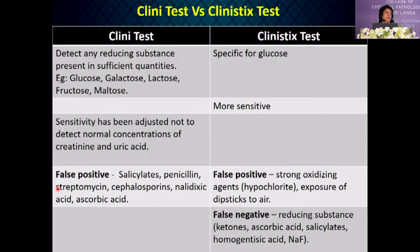Comparing Clinitest and Clinistix: Clinitest detects reducing substances, so glucose, galactose, lactose, fructose and maltose will all give positive results. Clinistix is specific for glucose and is more sensitive. In urine, creatinine and uric acid can also give a positive Clinistix result, but the sensitivity has been adjusted so as not to detect their normal concentrations in urine.